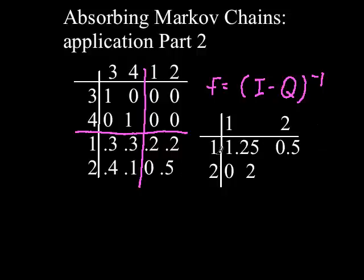For example, if we look at row 1, something in state 1 will go through 1.25 transitions in state 1 before being absorbed by state 3 or 4.